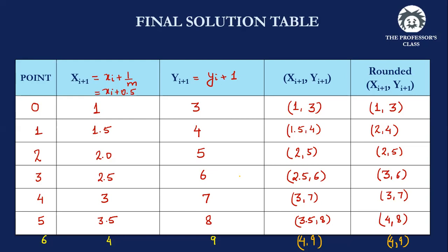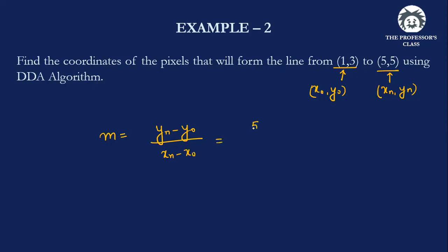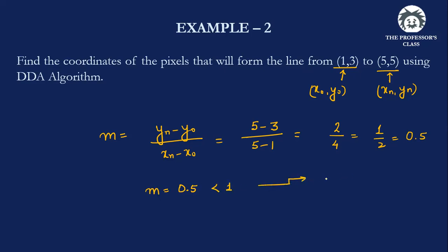Now let's look at another example where the slope is less than one. The starting point is the same as before, (1, 3), but the endpoint is now (5, 5). Calculating the slope: (yₙ - y₀) / (xₙ - x₀) = (5 - 3) / (5 - 1) = 2/4 = 0.5. So the slope is 0.5, which is less than one.